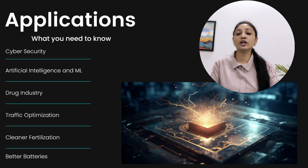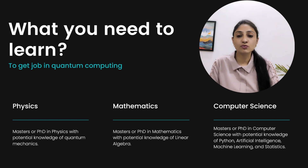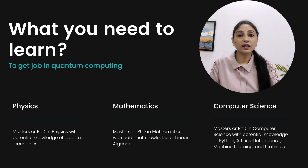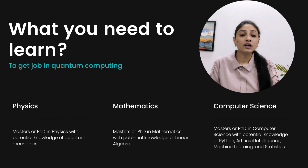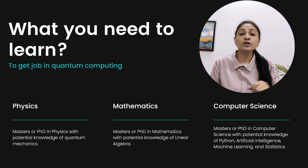If you want to pursue a career in any of these fields, you must have knowledge of quantum computing. To get a job in quantum computing, a degree in physics, mathematics, or computer science is required. A master's or doctorate in physics is highly valuable, as is a master's or PhD in mathematics. For computer science, a degree is needed and a doctorate is quite advantageous. Additionally, knowledge of AI, machine learning, and data science will be very beneficial.